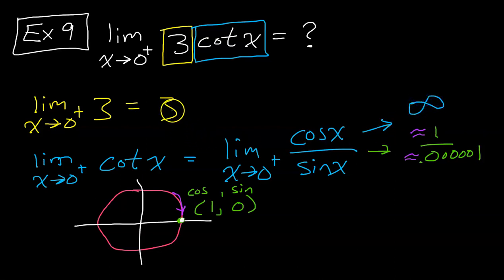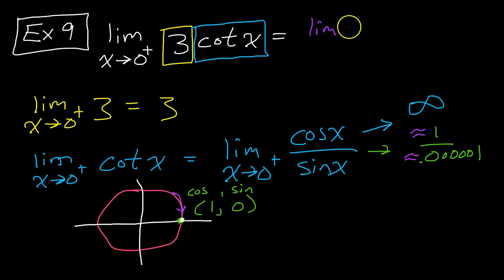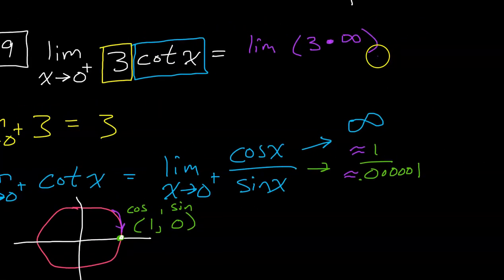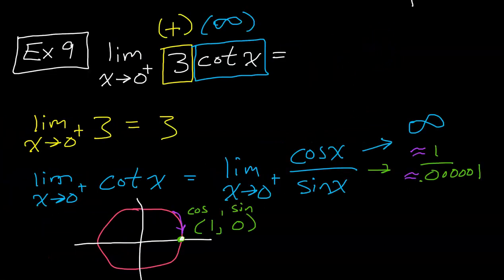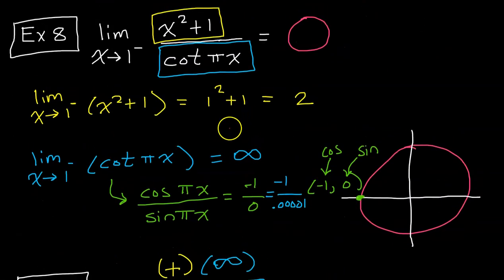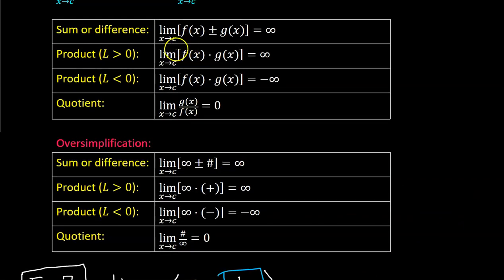We have a numerical limit (3, a positive number) and an infinite limit (cot(x)→∞). This is a product. Using our rules: a positive number times infinity gives a limit of positive infinity. So the limit as x→0⁺ of 3·cot(x) is positive infinity.